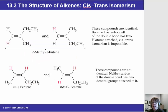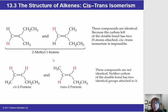Just because there's a double bond does not mean there has to be cis or trans isomerism. For example, if a carbon in the double bond is bonded to two of the same substituents — such as two hydrogens — there cannot be cis or trans isomerism. But if it is possible, as in cis-2-pentene and trans-2-pentene, those two isomers are different chemicals, and we indicate which is which by writing an italic cis or trans before the entire name.